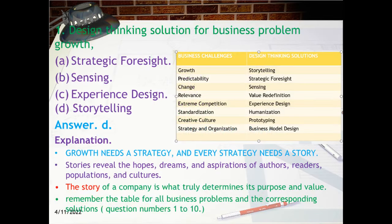Question 1: Design Thinking Solution for Business Problem — Growth. Options: A. Strategic Foresight, B. Sensing, C. Experience Design, D. Storytelling. Answer is D. Storytelling.